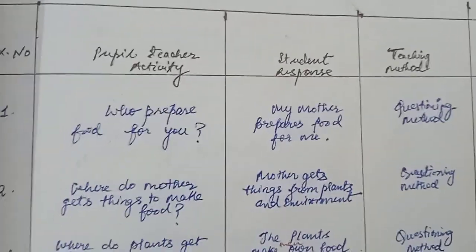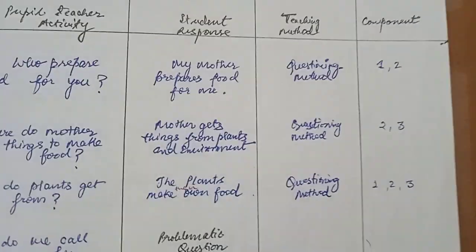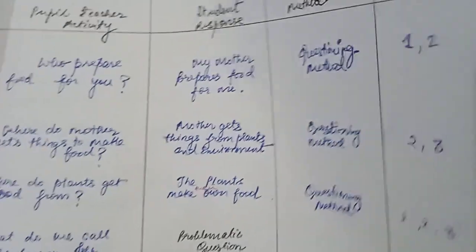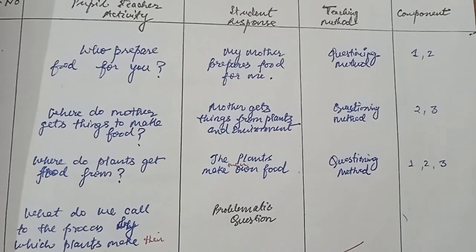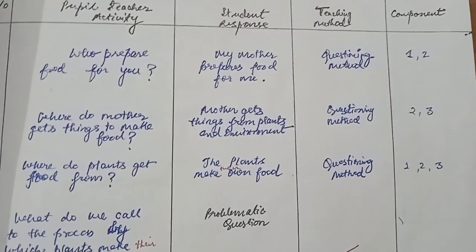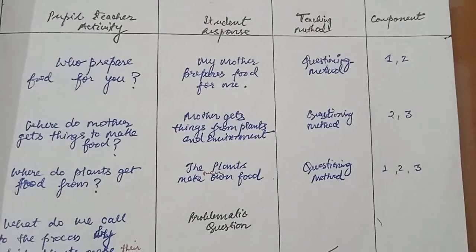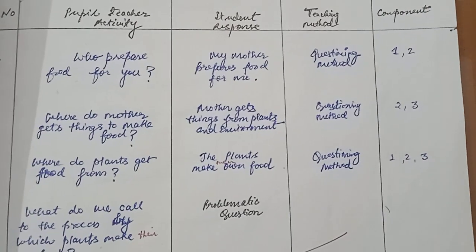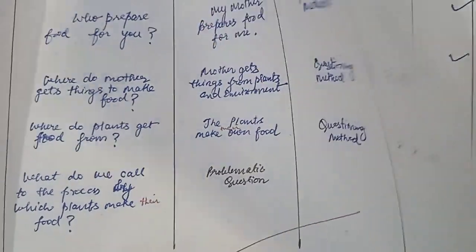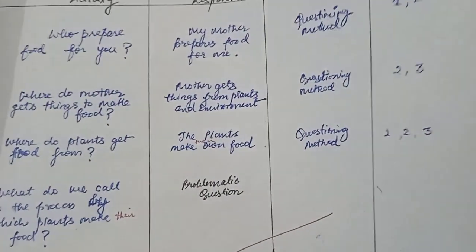The question is: who prepares food for you? Answer: my mother prepares food for me. This uses the question-answer method. The next question is: where does the mother get the things to make the food? Answer: mother gets the things from the plants and environment. Question method, components used.